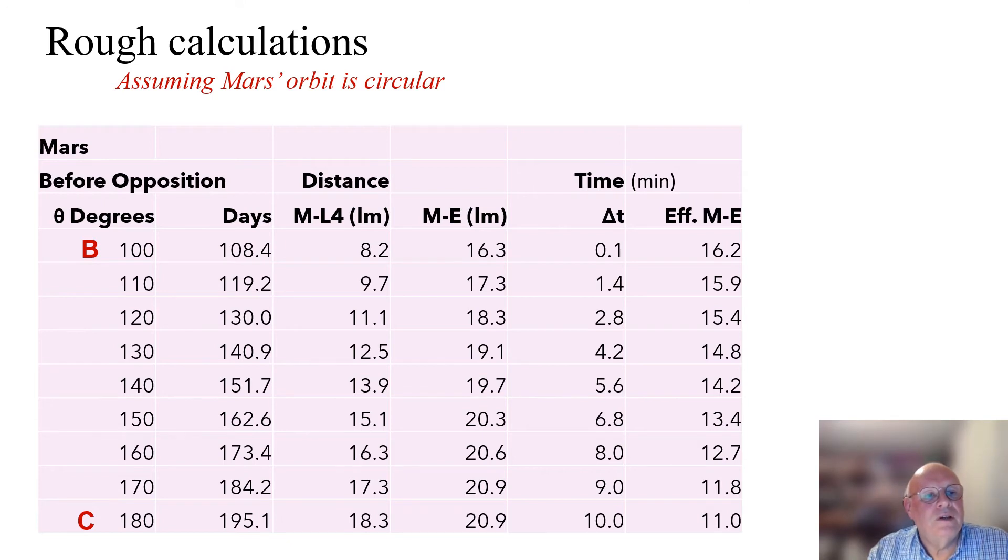Mars is in opposition when it's exactly in the opposite direction from the Sun, as seen from the Earth. And this happens when theta equals zero degrees. The first two columns give theta varying from 180 to 100 degrees, and also the days before opposition.